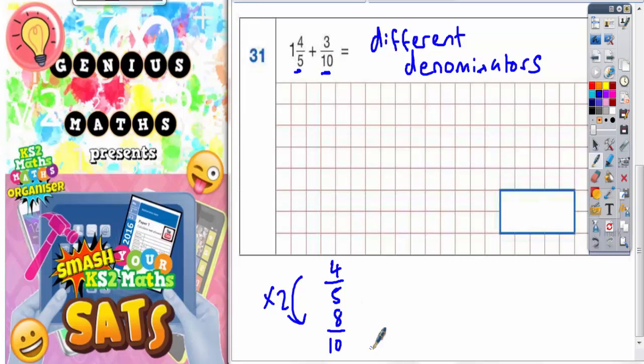But you've also got 3/10. Now 3/10 is already in tenths. We just need the denominators to be the same. So 8/10 add 3/10 is going to be 11/10.